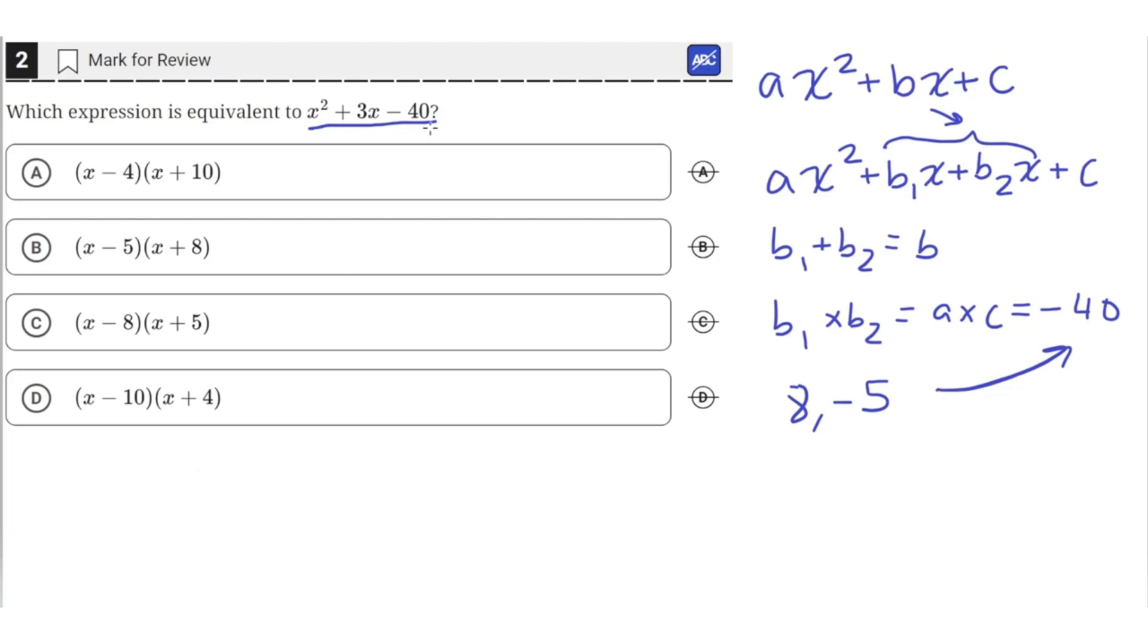When we split the b term into 8x minus 5x, we are left with x squared plus 8x minus 5x minus 40.